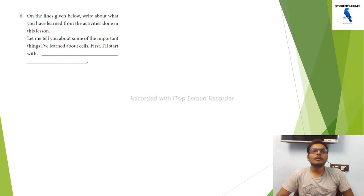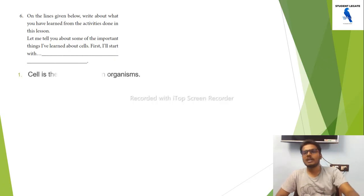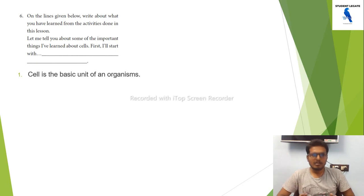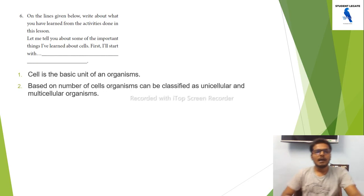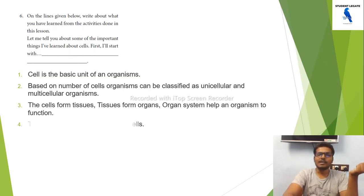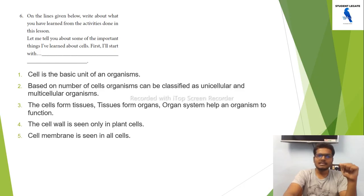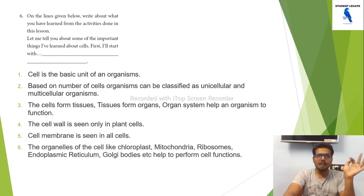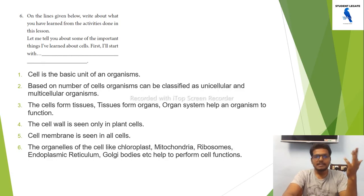Let me tell you some important things I have learnt about the cell. The cell is the basic unit of an organism. Based on the number of cells, organisms can be classified into unicellular and multicellular. Cells form tissue, tissue forms organ, organ forms organ system. The cell wall is seen only in plant cells. The cell membrane is seen in all cells. Organelles of the cell include chloroplasm, mitochondria, ribosome, endoplasmic reticulum, Golgi body, etc., which help perform cell functions. The nucleus is the central organelle of the cell.